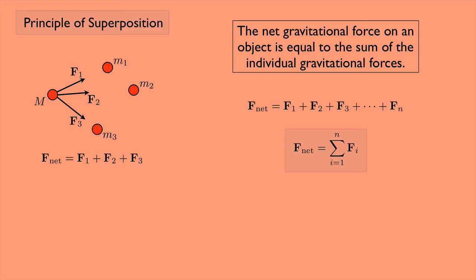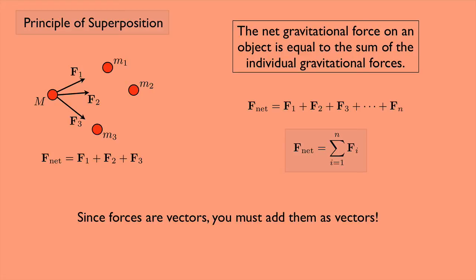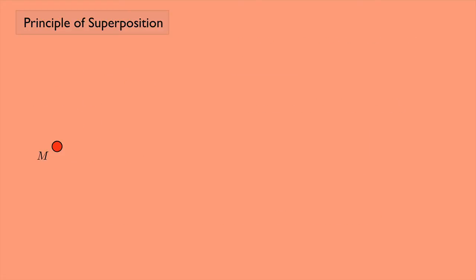But since forces are vectors, you have to add them as vectors. So if I have a mass M and then a mass little m1 and a mass little m2, I can look at the forces on big M. There will be an attractive force from mass 1 and an attractive force from mass 2. To add these, I have to treat them like vectors — using the tip-to-tail rule or the parallelogram rule, whatever you want. That result would be F net.